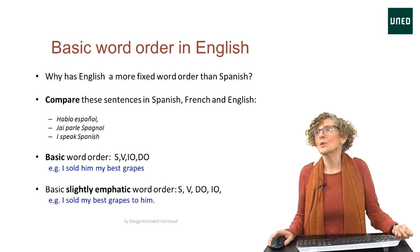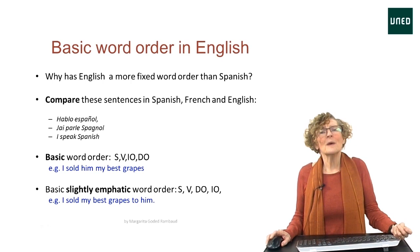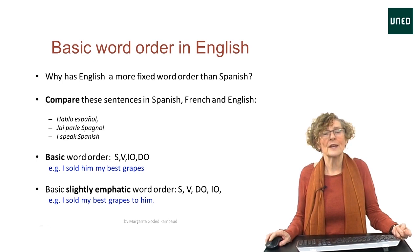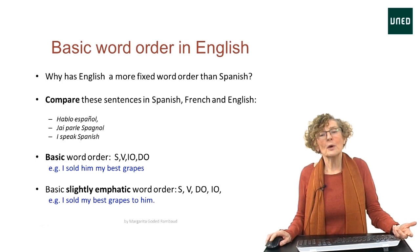What's the basic word order in English? In Spanish we say 'hablo español', in French 'je parle español', and in English 'I speak English'. The difference is that the Spanish verb phrase does not include a personal pronoun, because there is no need for it. In French the personal pronoun is 'je', and in English it is 'I'. In both French and English, the subject must be included in the sentence.